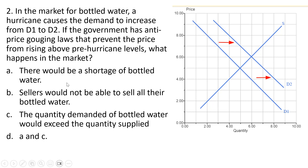The first answer choice is correct: there would be a shortage of bottled water. The quantity demanded would be 7, and that would exceed the quantity supplied — read off this upward sloping supply curve — of 5. Answer choice A is correct. Answer choice B is not correct; sellers would not be unable to sell their bottled water. Sellers would sell all of their bottled water, and there would be many consumers wanting to buy more. Answer choice C is also correct: the quantity demanded would be 7 and the quantity supplied would be 5, for a shortage of 2.